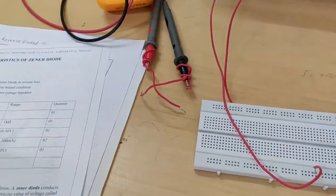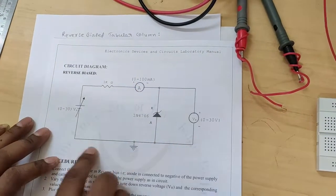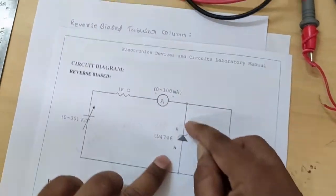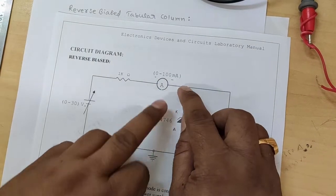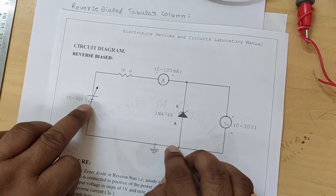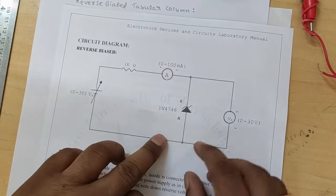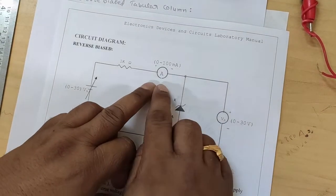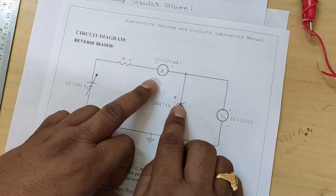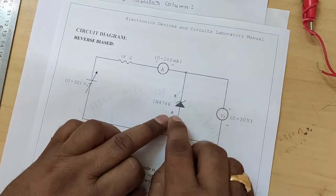Next is the reverse bias circuit diagram. Here the Zener diode cathode is connected to the power supply positive, and the anode is connected to the regulated power supply negative. The ammeter is connected in series through the diode and the voltmeter is connected in parallel to the diode.